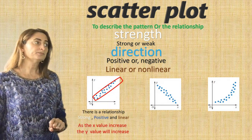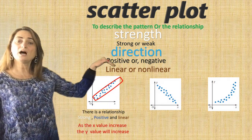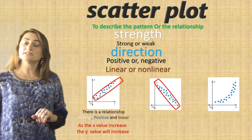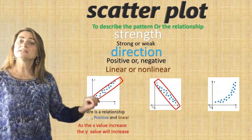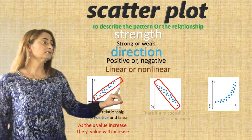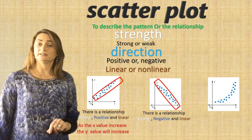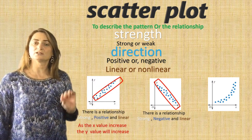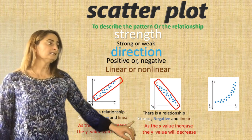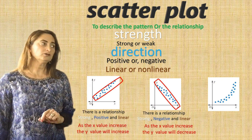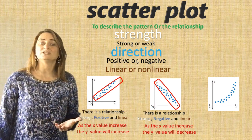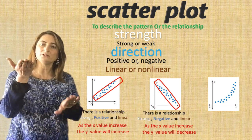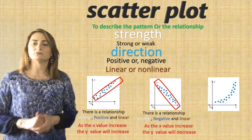Now the second one — watch how from left to right there is a pattern. It's going down, which means it is strong, negative, and linear because the line goes down and the dots are close to each other. As the x value increases, the y value will decrease. So there's an opposite relationship — one value increases, the other one will decrease.